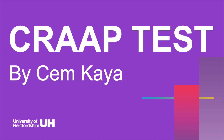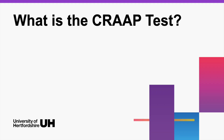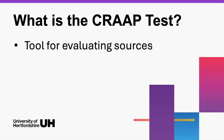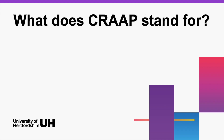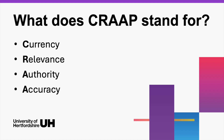Finding reliable information is crucial for research and academic work. The CRAP test is a handy tool to evaluate the quality of your sources. Let's break it down. CRAP stands for Currency, Relevance, Authority, Accuracy, and Purpose.